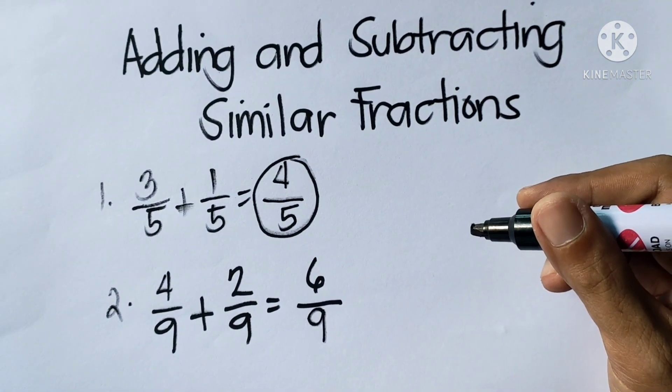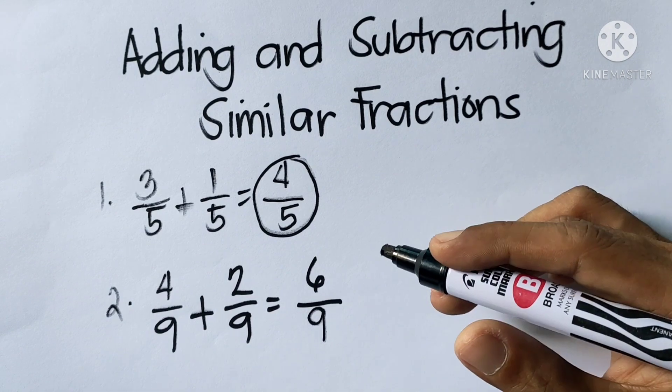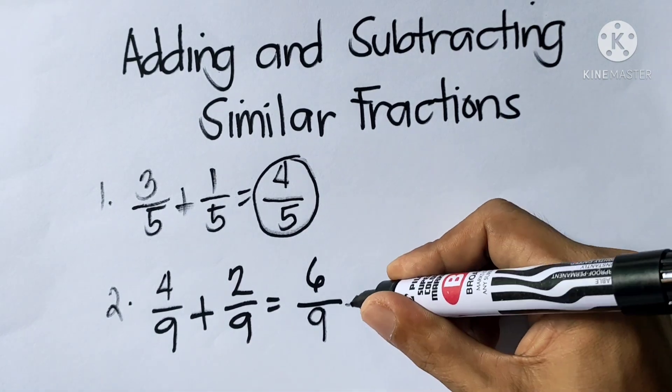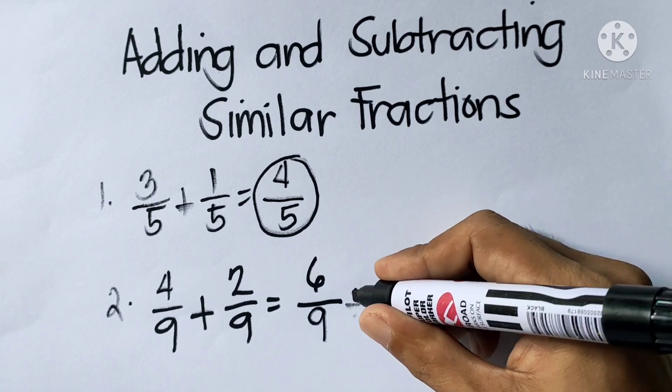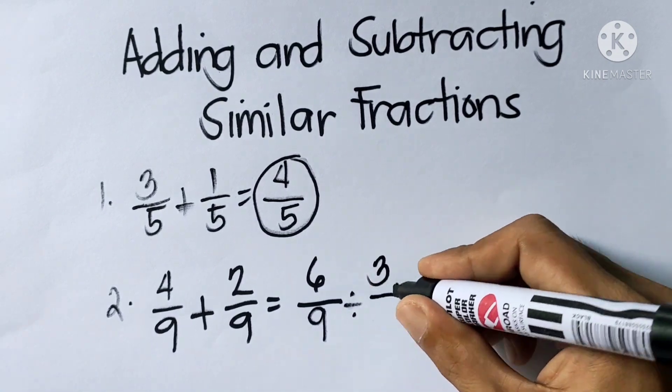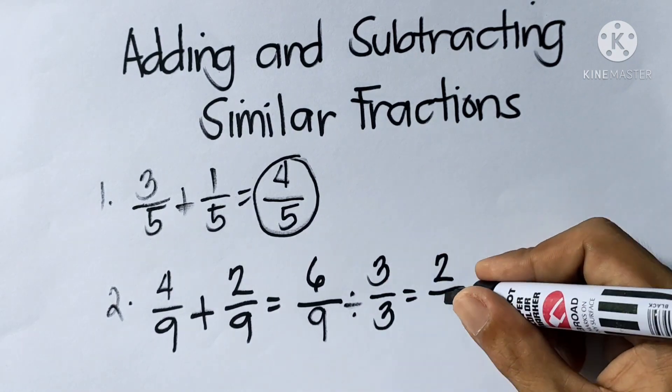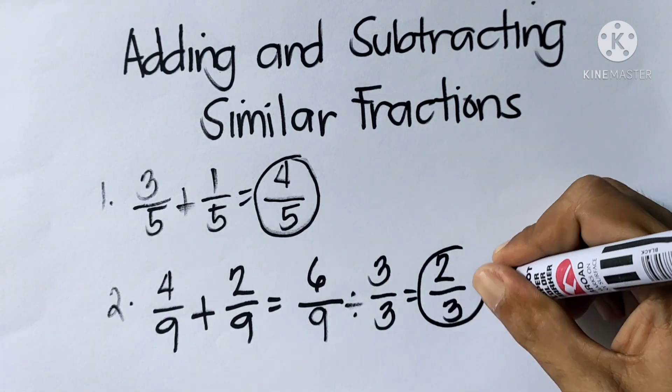The answer is 6 over 9, but we need to give the lowest term. The GCF is 3, so we're going to divide by 3. 6 divided by 3 is 2, 9 divided by 3 is 3. So the answer is 2 thirds.